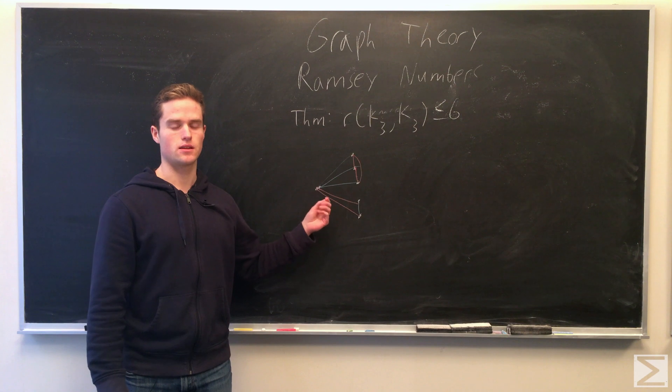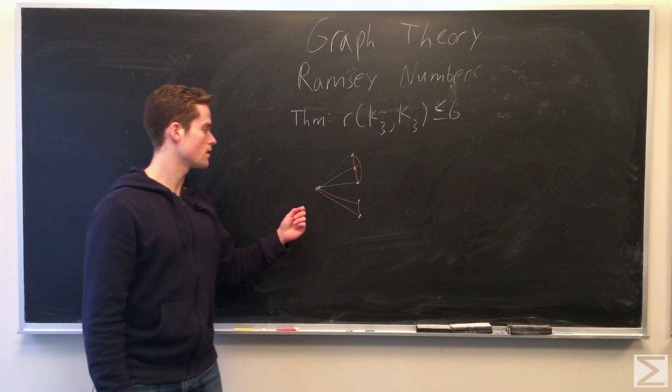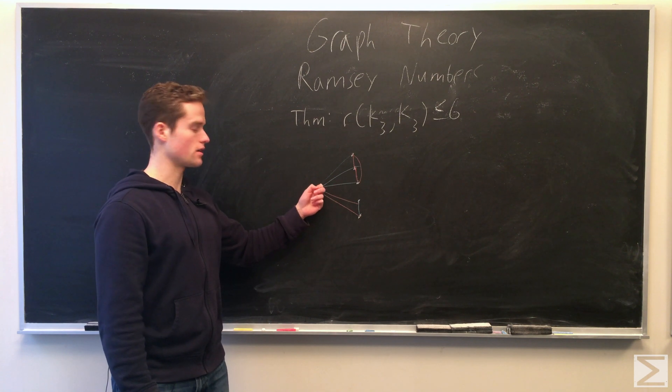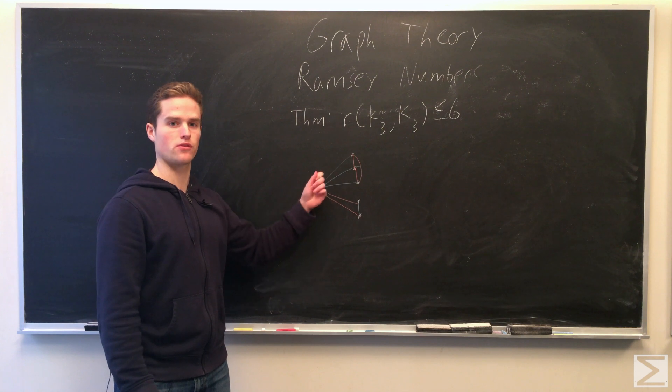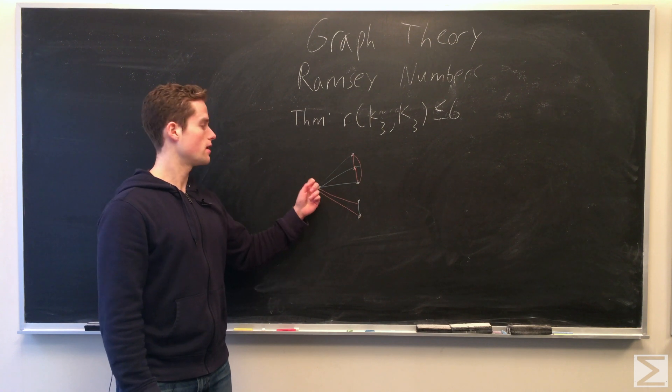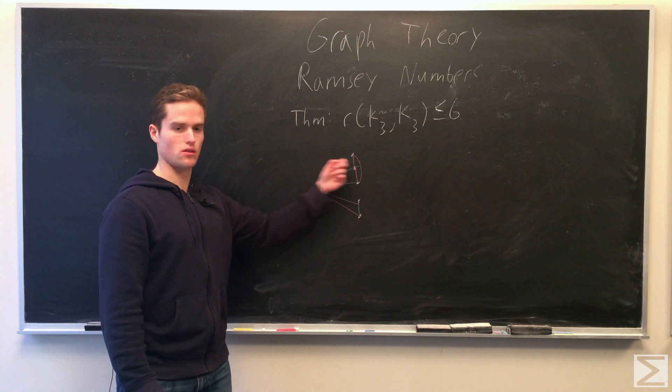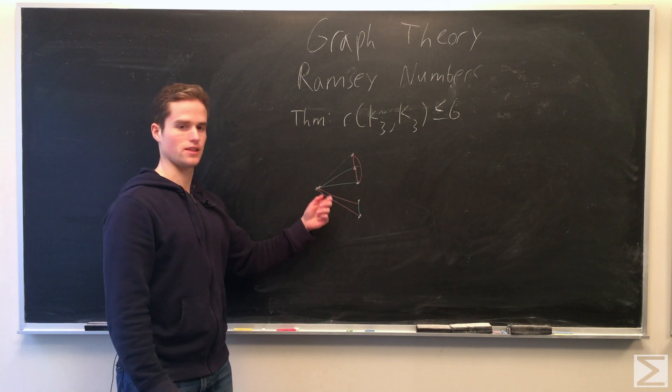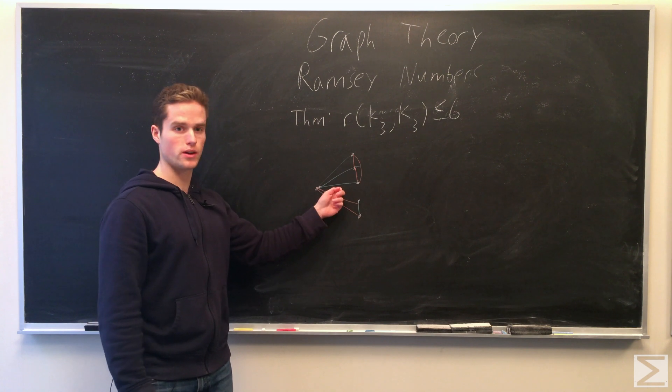And this follows: take a graph with 6 vertices, once again pull out one of the vertices. Note that by the pigeonhole principle, at least one of blue or red, looking at the edges going from this vertex to the other ones, there are going to be 3 or more of either blue or red edges. So say we have 3 or more blue edges.